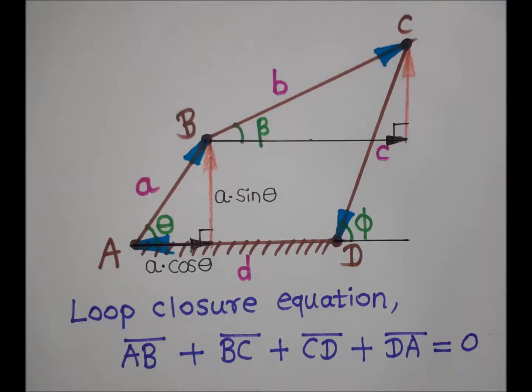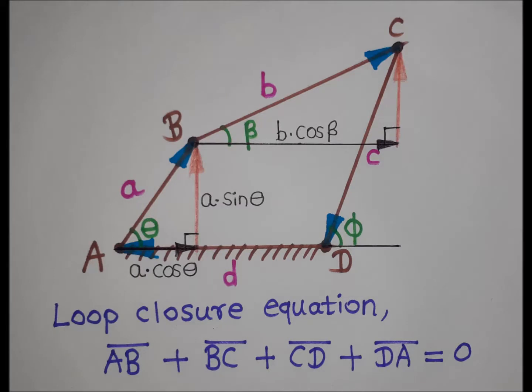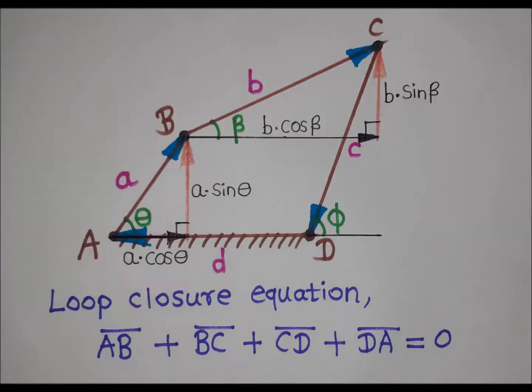Similarly, vector BC can be resolved into two components: one horizontal and one vertical. By observation, the horizontal component is directed to the right and the vertical component is directed upward. The horizontal component of BC is B·cos(beta), and the vertical component is B·sin(beta).